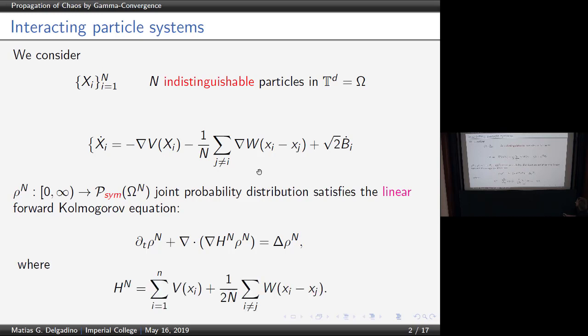Here H_n is depending on v and w, and it's just the sum over the different coordinates — with respect to here it should be a large N or small n.